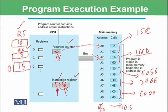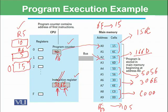Next, instruction 306E is fetched from A6. Opcode 3 means store — you want to store information from a register to main memory. The operand 0 identifies the source register (holding 15), and 6E is the destination address in main memory. So the value 15 is stored at main memory address 6E. The program counter is now pointing to A8.